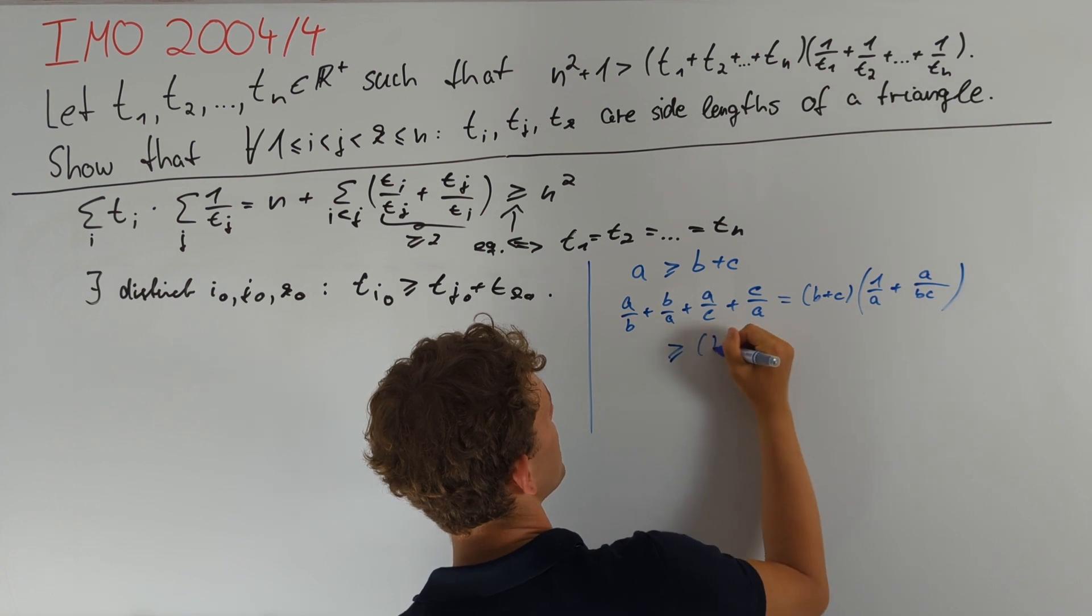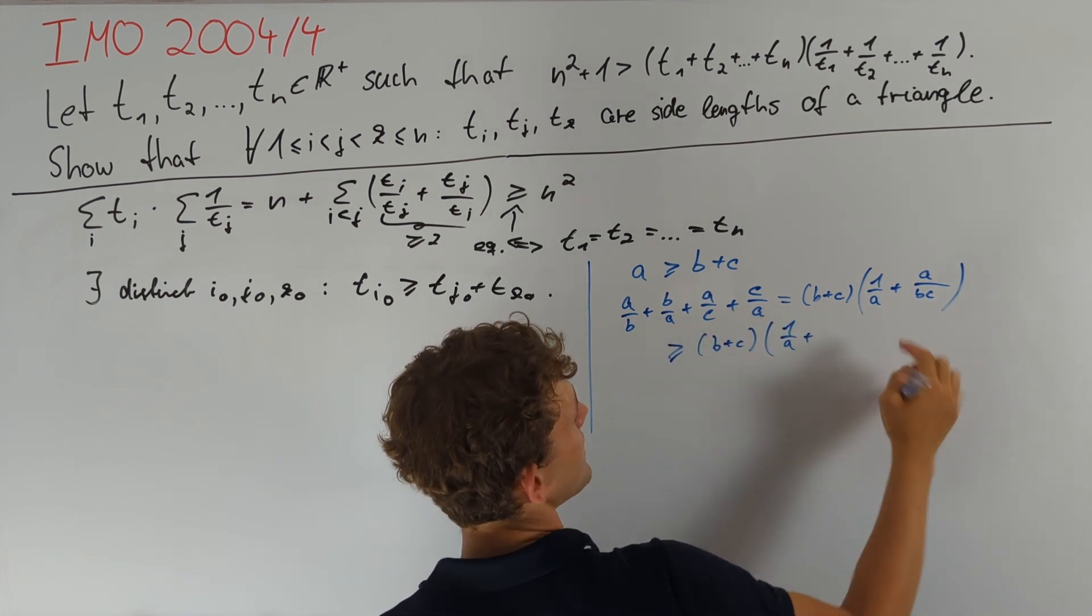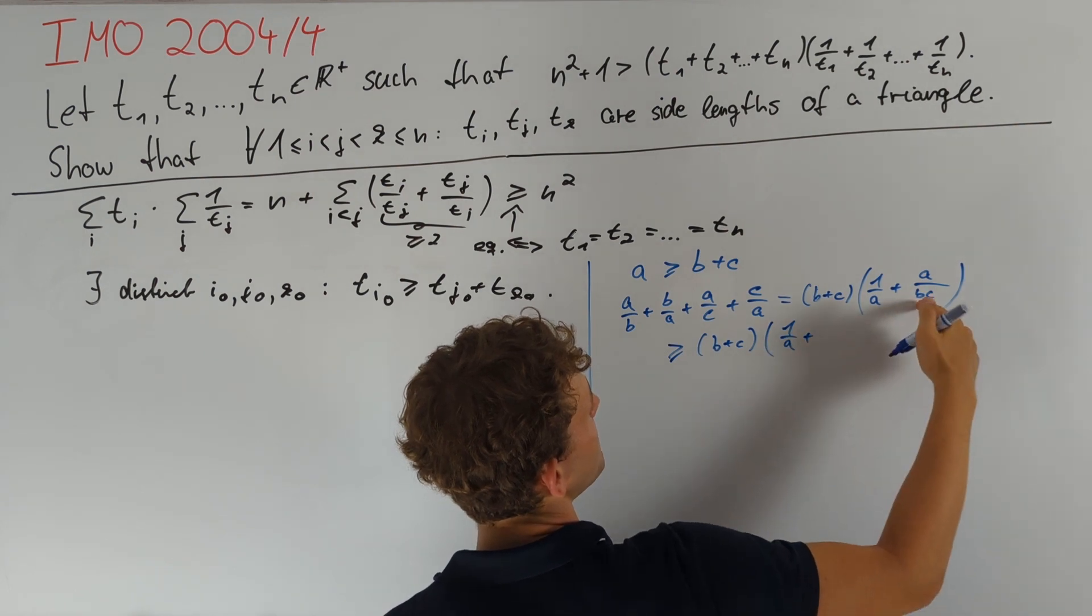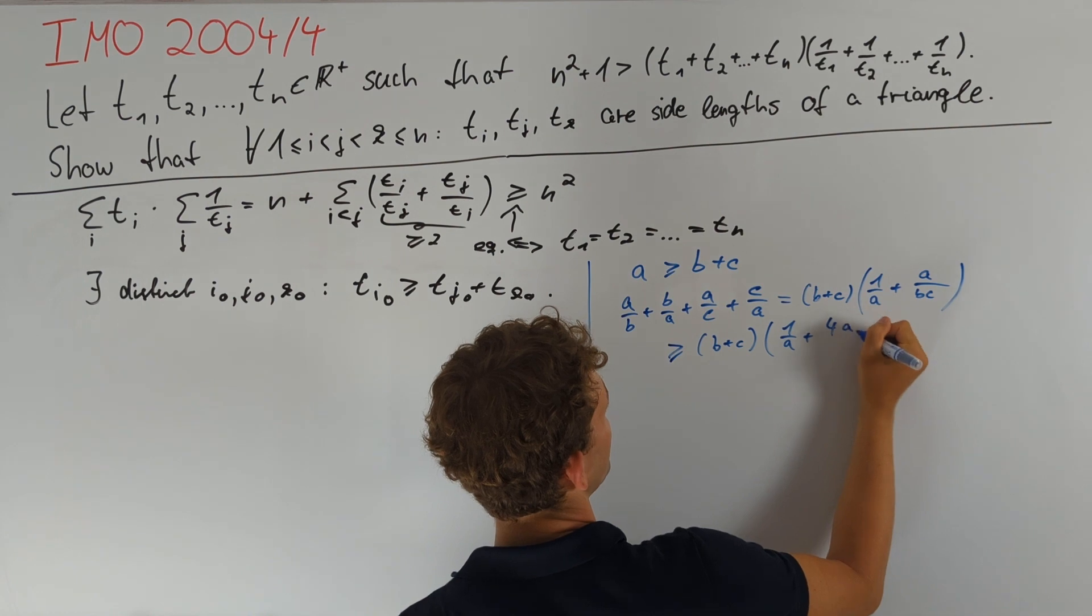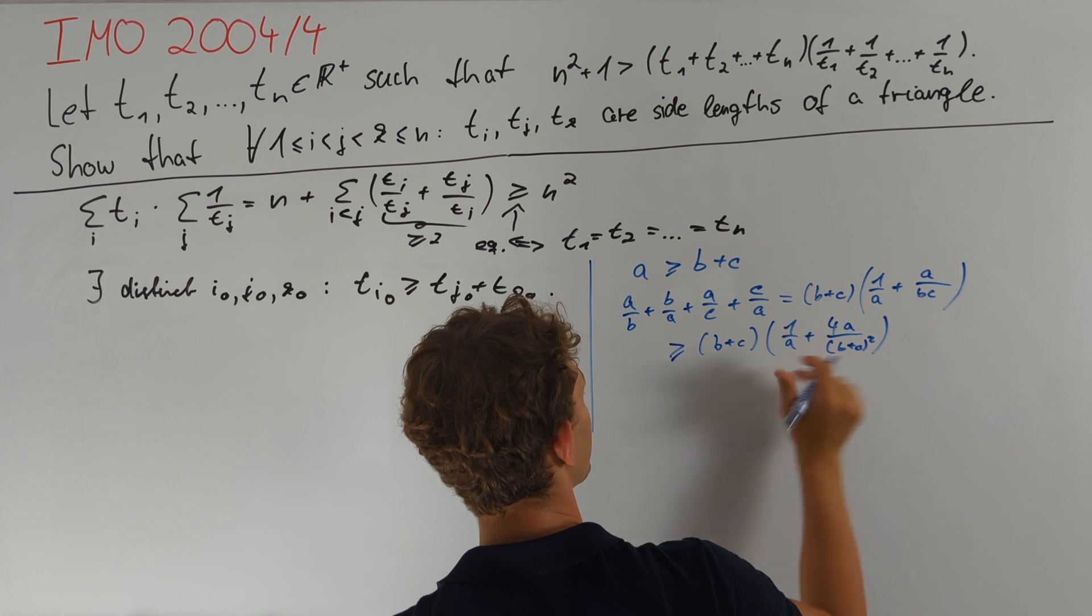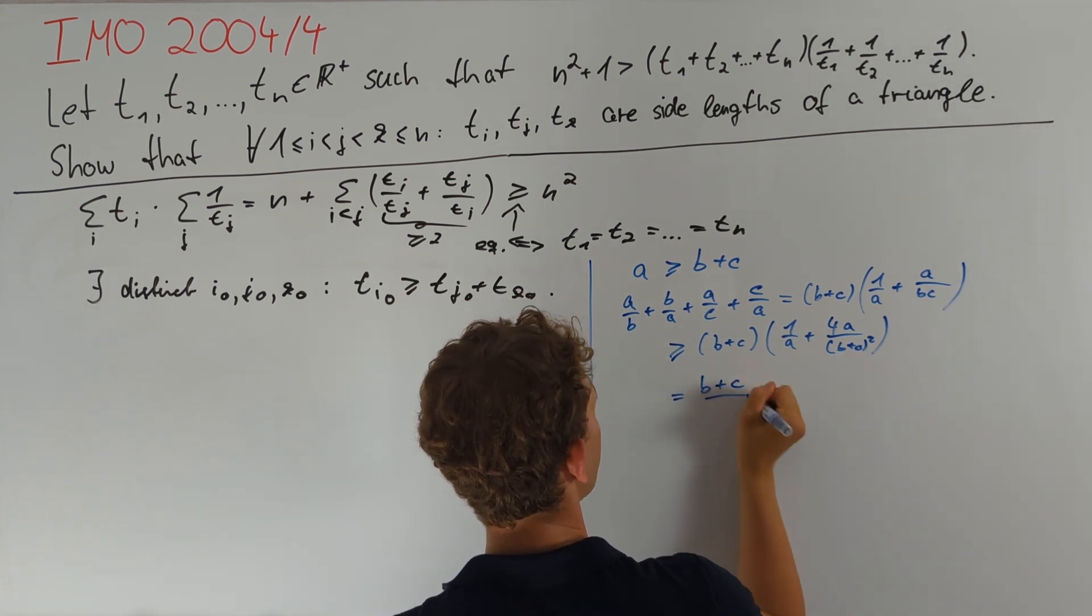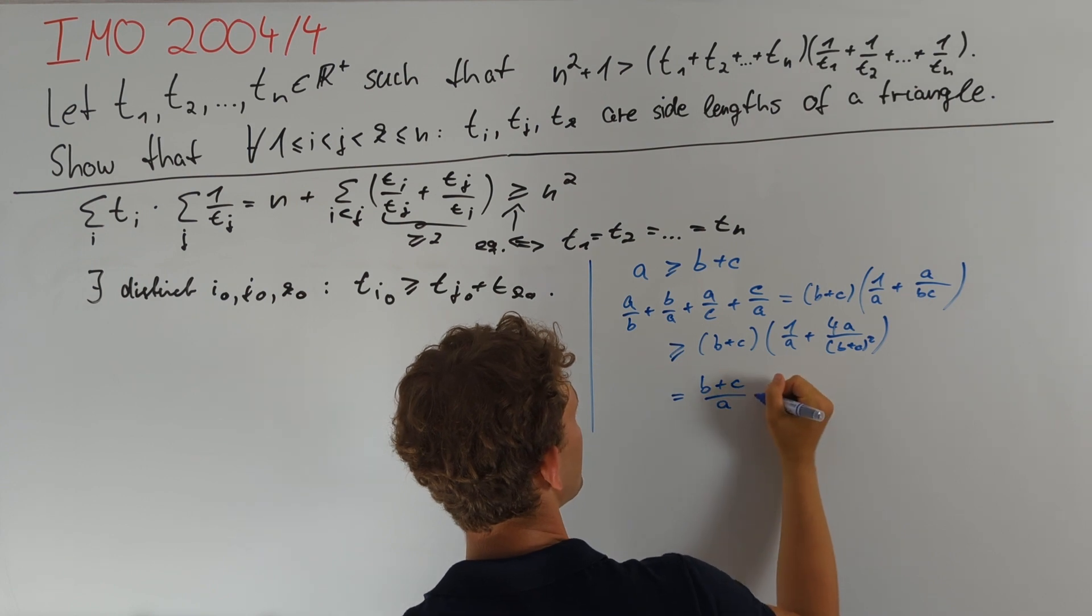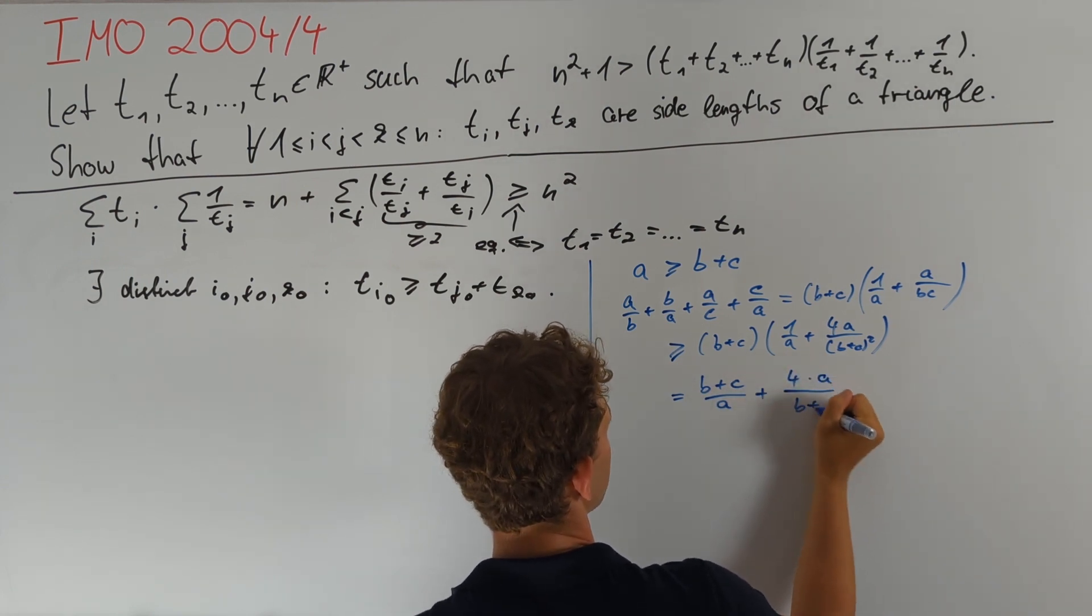We can bound bc from above using AM-GM to obtain that all of this is at least (b + c)(1/a + a/((b + c)²/4)), which equals 4a/(b + c)². After redistributing b + c into that sum, we get almost a sum of reciprocals. Namely, this equals (b + c)/a + 4a/(b + c).